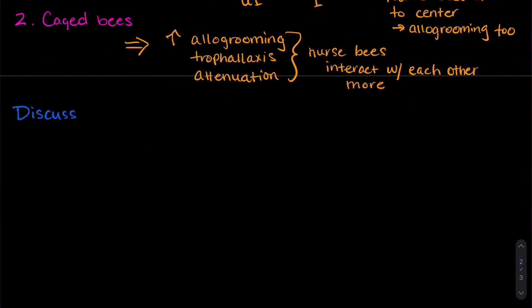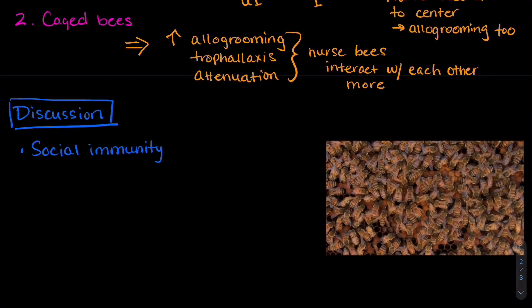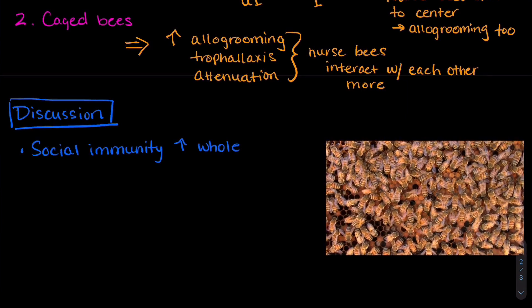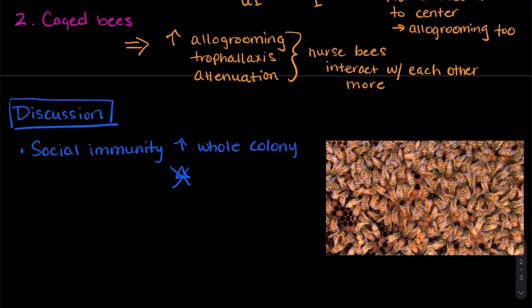So what does this all mean? Let's discuss. Well, it seems that colonies on the whole increase their social immunity in response to parasite infections, but individual bees don't.